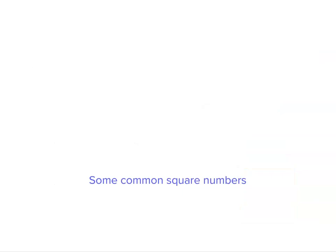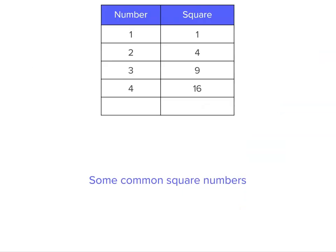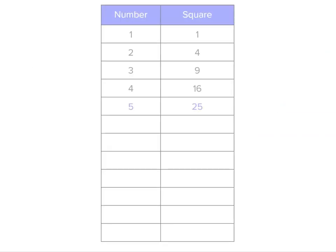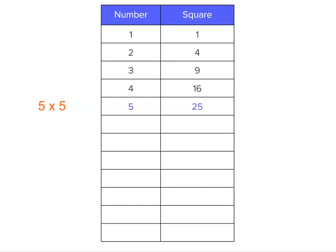Now there are some common square numbers that you'll get to use. We've just looked at the first 4. We can carry on and do a few more. So 5 times 5 gives us 25. So we would say the square of 5 is 25.